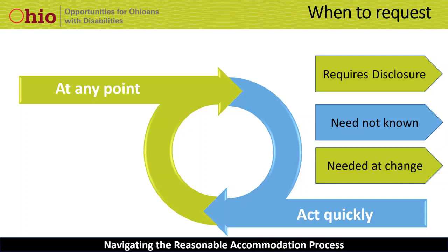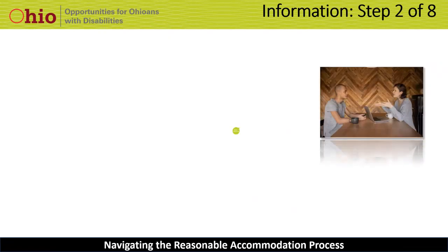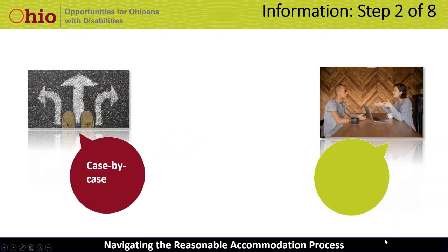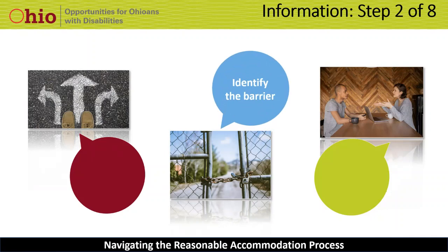We are ready for Step 2, which includes gathering the information needed to process the request. This part of the process is an interactive collaboration between you and the person making the request to learn what the person needs and then figure out the solution together. This is why the EEOC refers to this as the interactive process. Each person, each disability, each workplace, and each employer's situation is unique, so each request for an accommodation must be considered on a case-by-case basis. What you're trying to identify is what barrier exists in the hiring process, the job performance, or the work environment, and how that barrier can be overcome through implementing a reasonable accommodation.